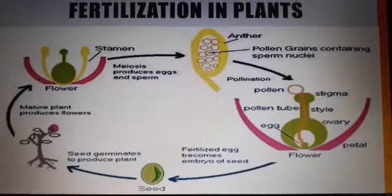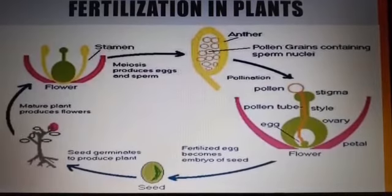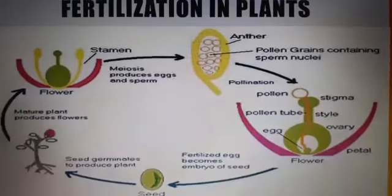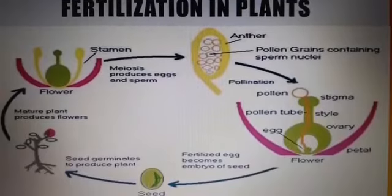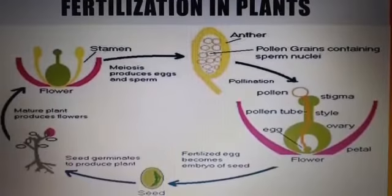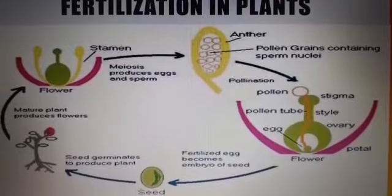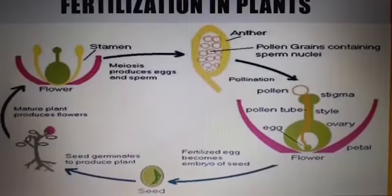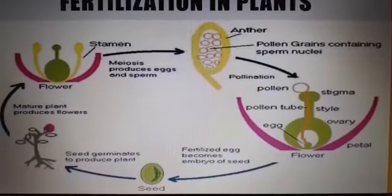The fertilized egg inside the ovary develops into the embryo, and this embryo develops into the seeds. The ovary then grows large and develops into the fruit. The seeds are present inside the fruit, and these fruits further germinate to form a new mature plant.